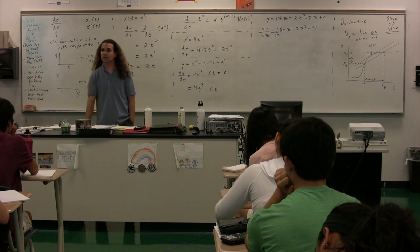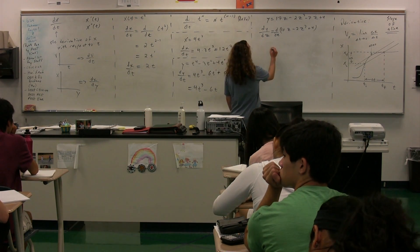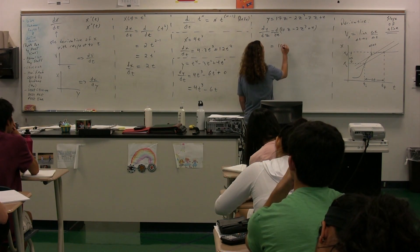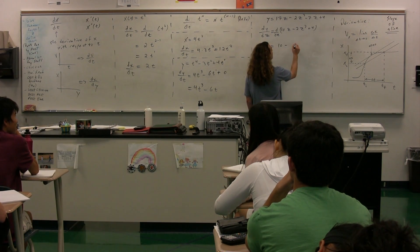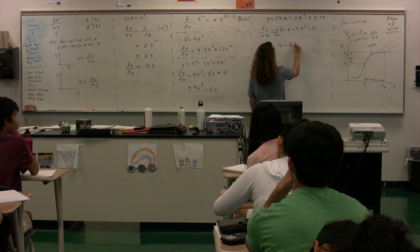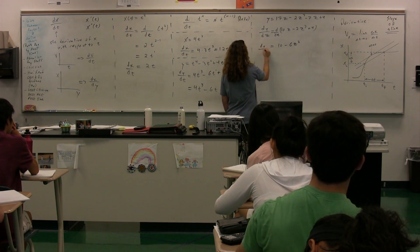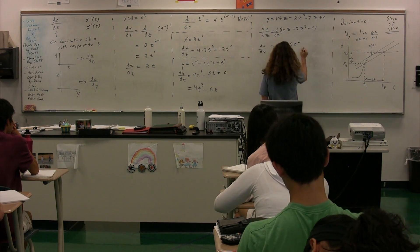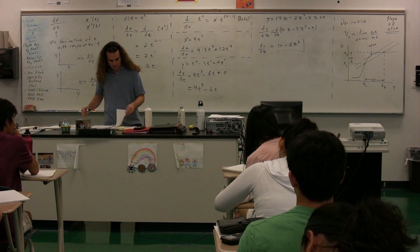And we're going to take the derivative with respect to z of that. So let's take the derivative of that, please. Cana? So 10z becomes 10. Okay. And then the negative 2z cubed becomes minus 6z squared. And the 4 just goes to 0. So dy/dz, in this particular case, is going to be 10 minus 6z squared.